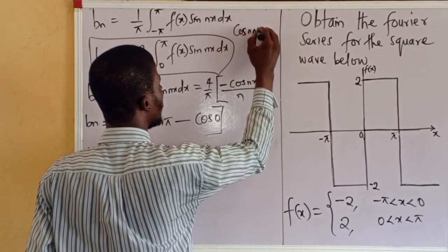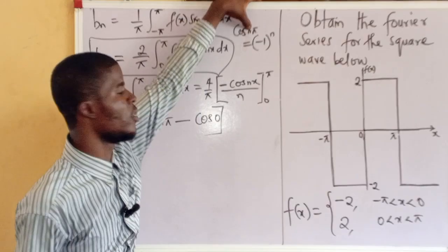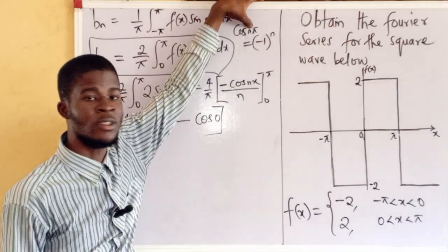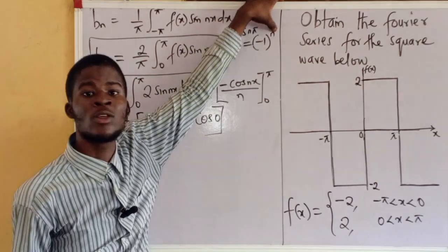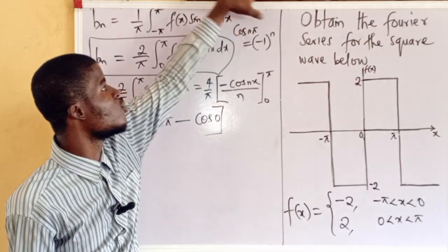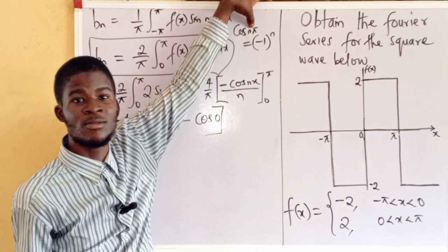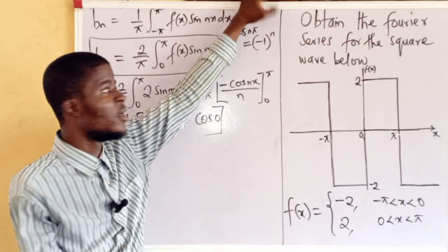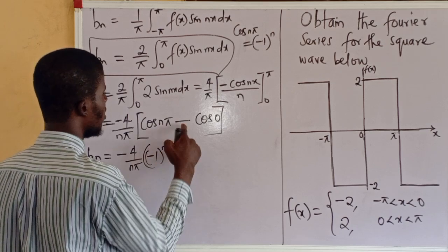For cos(nπ): cos(nπ) is actually equivalent to minus 1 raised to the power n. We can verify — plug in n=1: cos(π) = cos(180°) = minus 1, and (−1)¹ = minus 1. They match. Plug in n=2: cos(360°) = 1, and (−1)² = 1. They are the same. So we can substitute minus 1 raised to power n, giving b sub n equal to minus 4 over n pi times the quantity (minus 1 to the power n minus 1).